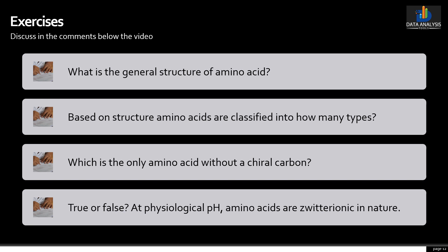I have put some questions for you to practice: What is the general structure of amino acids? Based on structure, amino acids are classified into how many types? Which is the only amino acid without a chiral carbon? And finally, true or false: at physiological pH, amino acids are zwitterionic in nature. We can discuss these questions or any other questions that may come up in the comment section.